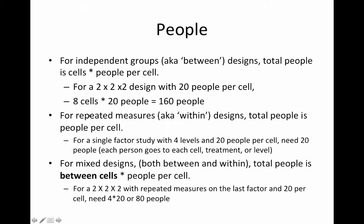For a repeated measures design — a within design — the total people equals people per cell. So if we had a single-factor study with four levels and twenty people, we'd need twenty people. If we had a two-by-two-by-two within design with twenty people per cell, we'd need only twenty people because each of those twenty people would go through every treatment combination.